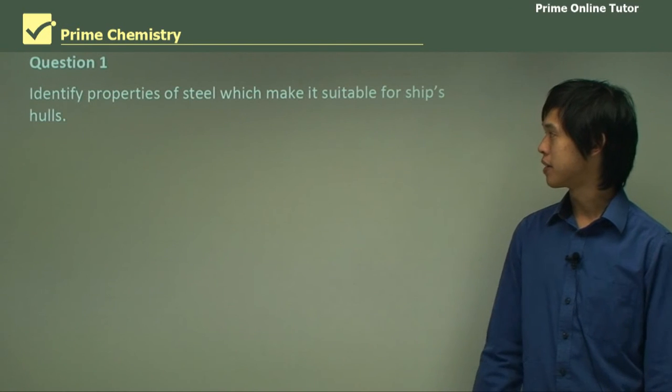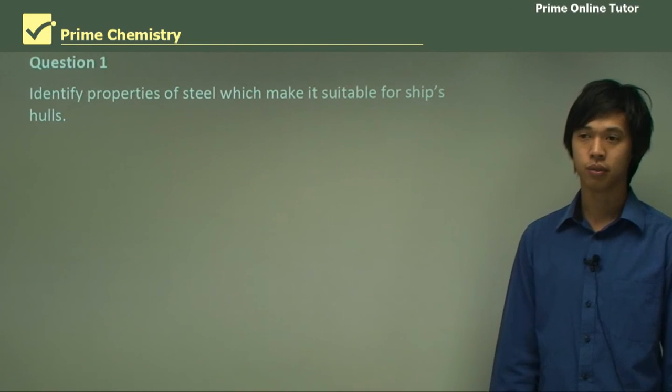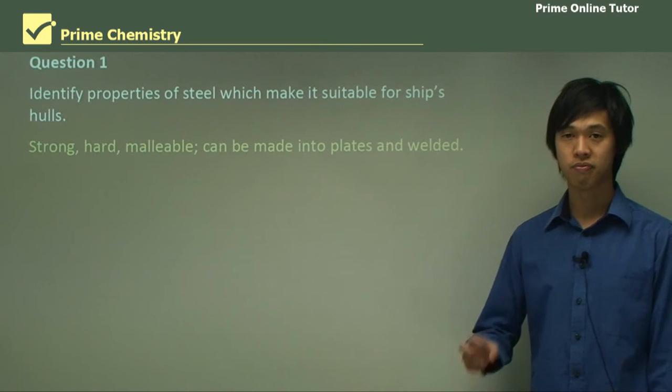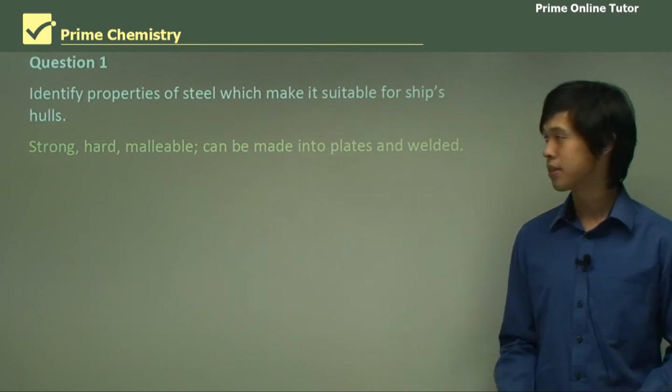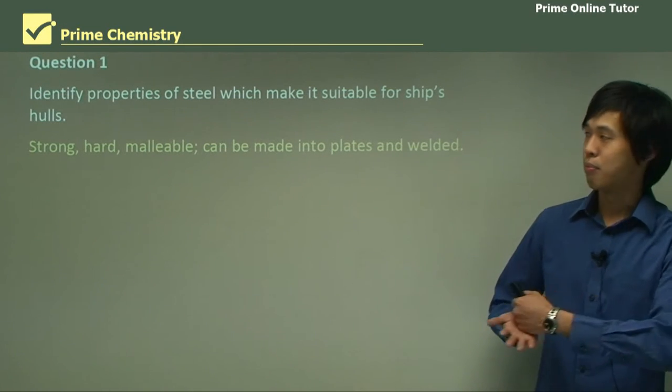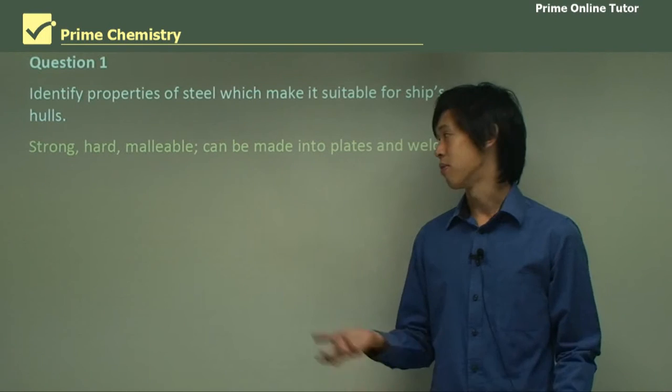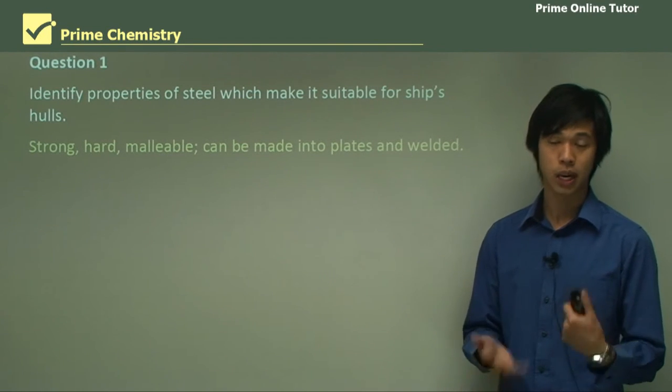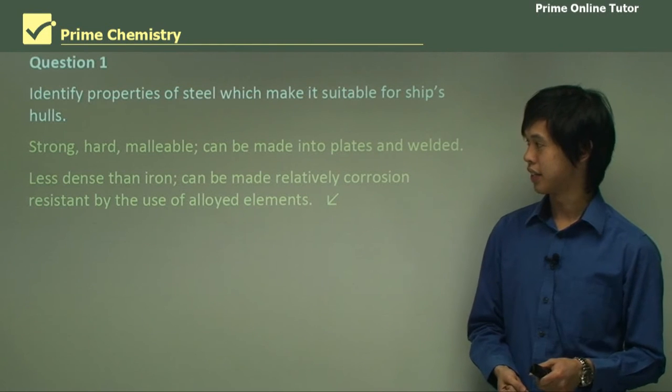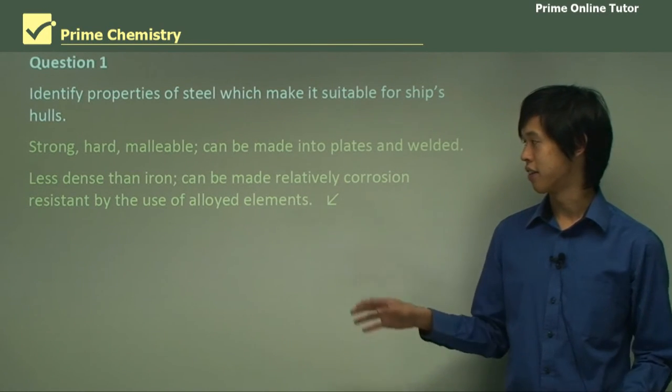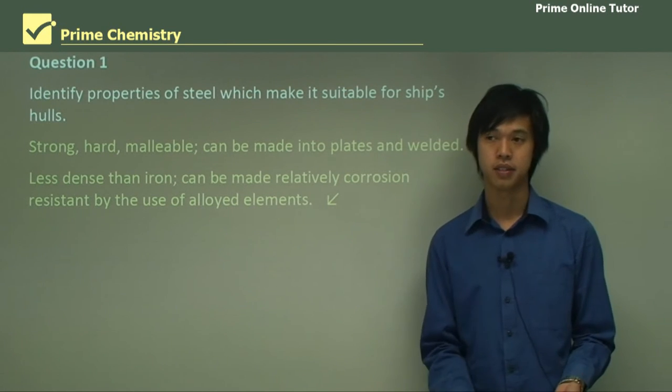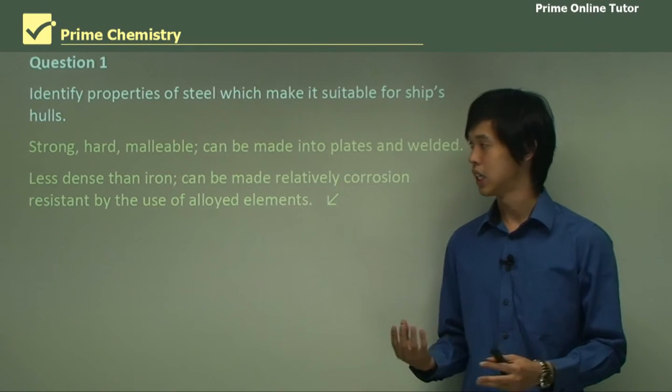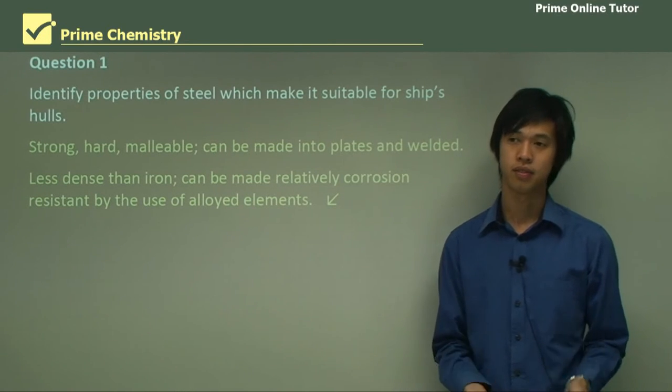Question one: Identify properties of steel which make it suitable for ship's hulls. It's strong—that's the main one. It's very hard. But while it's very hard, it's also malleable. So we can form it into different shapes. By being able to make it into different shapes, we can make it into plates and then weld them together. So having that ability to shape the metal is very good. And steel is less dense than iron and can be made very corrosion resistant, assuming we use the right elements. If we alloy the steel really well, we can get a very corrosion resistant, very strong metal that can be used very effectively in ships.